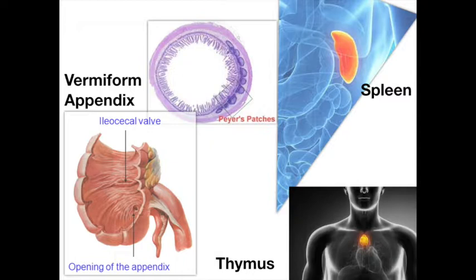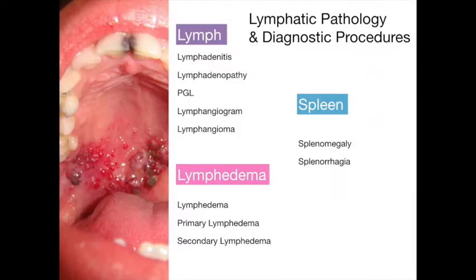The spleen stores extra erythrocytes and maintains the appropriate balance between the red blood cells and the plasma in circulation. The thymus is located superior to the heart. Although composed largely of lymphatic tissue, the thymus plays important roles in the endocrine and immune systems. Now let's look at the pathology and diagnostic procedures of lymphatic structures.